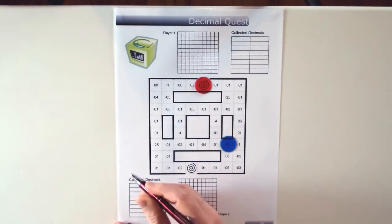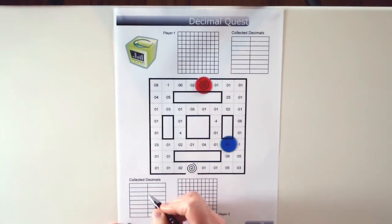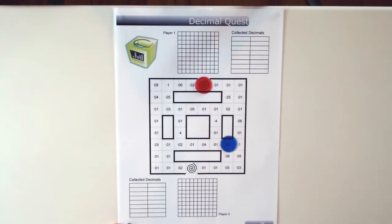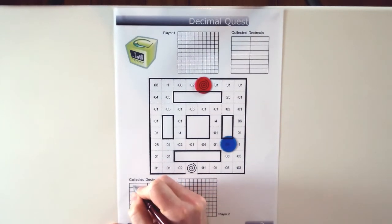They need to write it in their collected decimals space. So blue has just landed on 0.01, they're going to collect 0.01.